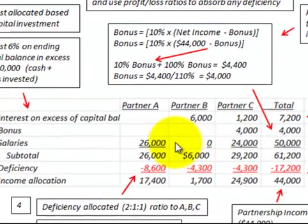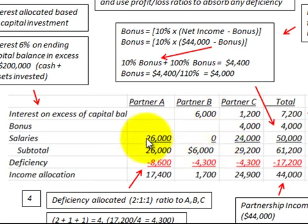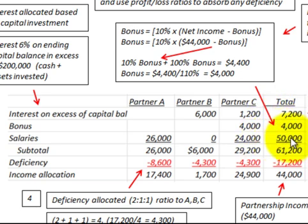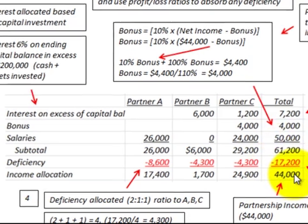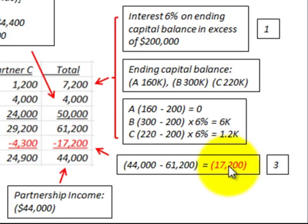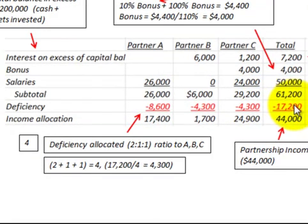Salaries go to Partners A and C as agreed: Partner A gets $26,000 and Partner C gets $24,000, for total salaries of $50,000. Adding interest of $7,200, the bonus of $4,000, and salaries of $50,000, we get a total allocated amount of $61,200. Since income was only $44,000, we over-allocated by $44,000 minus $61,200, which is a deficiency of $17,200.